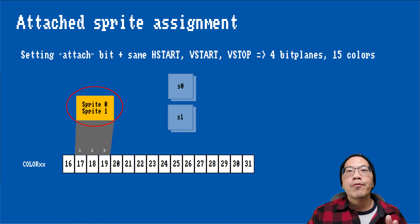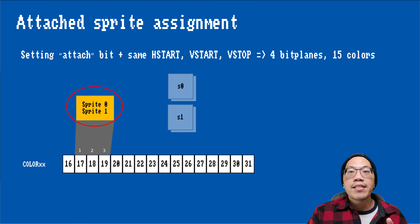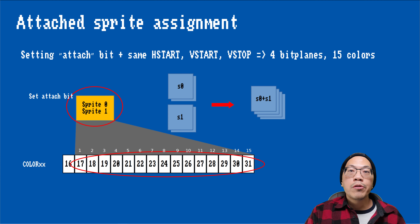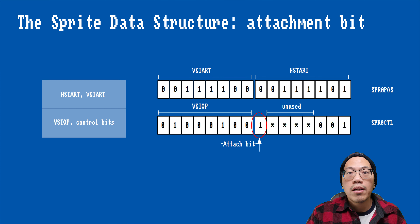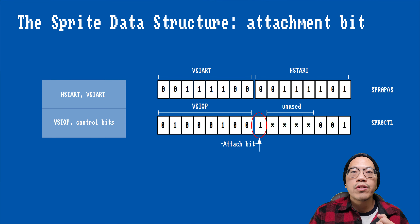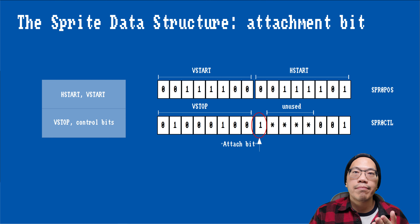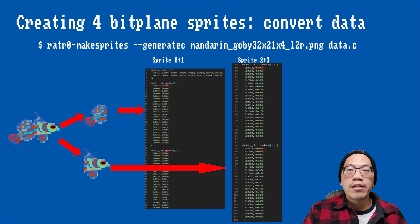For this, two things need to happen. First, we need to set the attached bit in the sprite control word. And second, both attached sprites need to have the same position and size. When these two conditions are true, the two sprites form a composite sprite with four bit planes. I am showing the first two words of the sprite data structure so you can see which bit has to be set. The MakeSprites utility can handle 15-color sprites too.